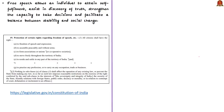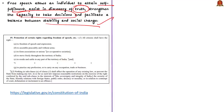Most of us know that free speech is one of the most significant principles of democracy. The purpose of this freedom is to allow an individual to attain self-fulfillment, assist in discovery of truth, strengthen the capacity of a person to take decisions, and facilitate a balance between stability and social change. So the freedom of speech and expression can be called as the first and foremost human right and the mother of all liberties.